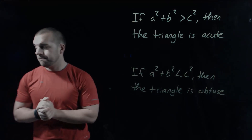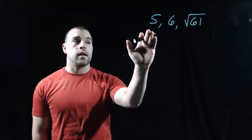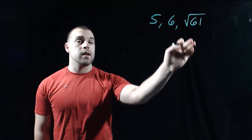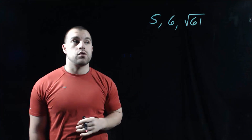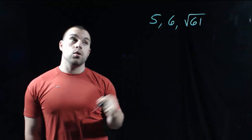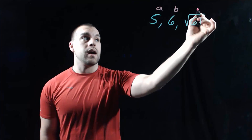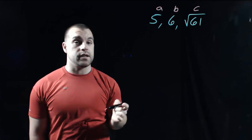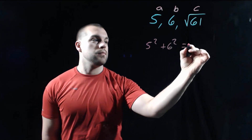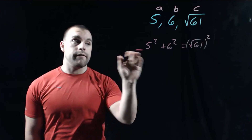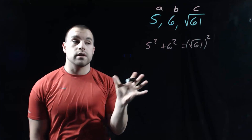In this first example, we're given three side lengths of 5, 6, and the square root of 61. We're going to use the Pythagorean Theorem to figure out what kind of triangle this is. These go in order: the 5 is going to be our A, the 6 is going to be our B, and the square root of 61 is going to be our C. Setting up our Pythagorean Theorem, we get 5 squared plus 6 squared equals the square root of 61 squared, and we're going to see if this is true.